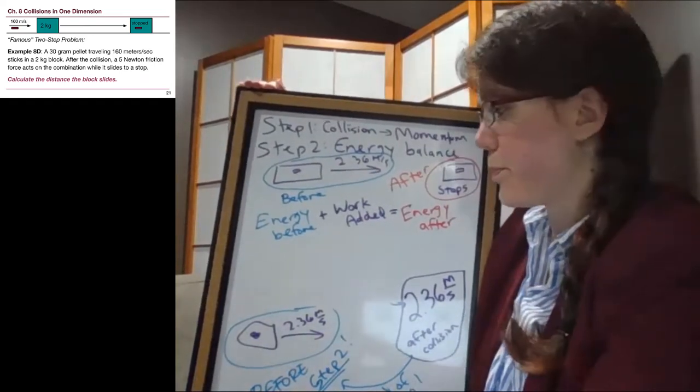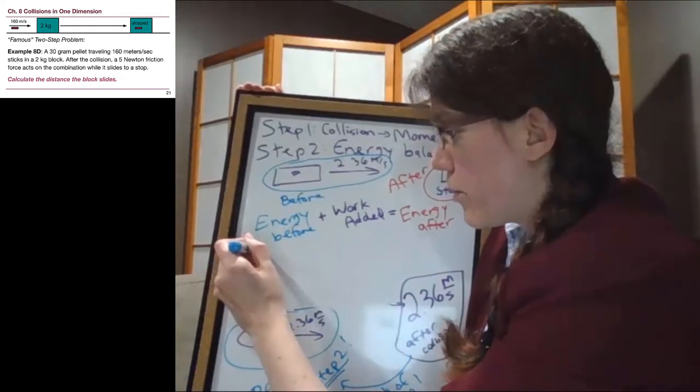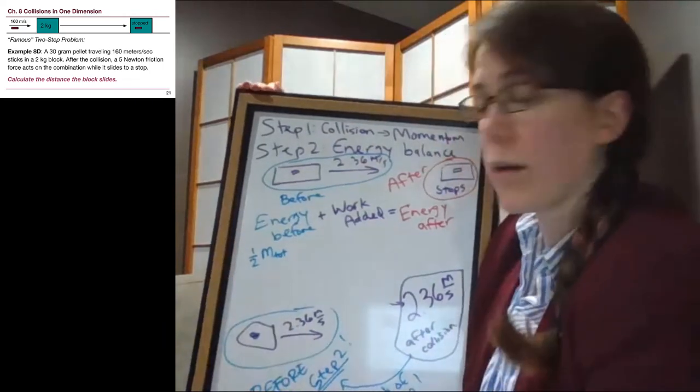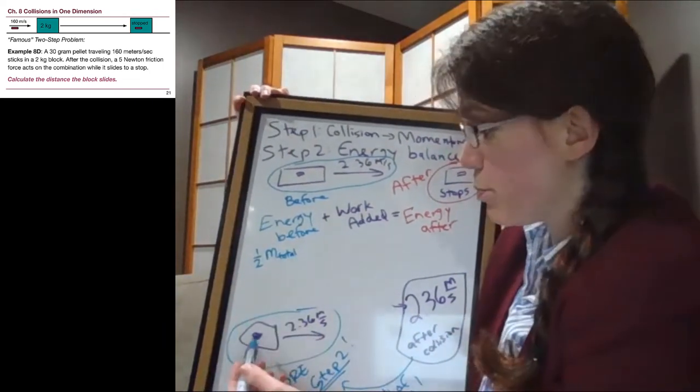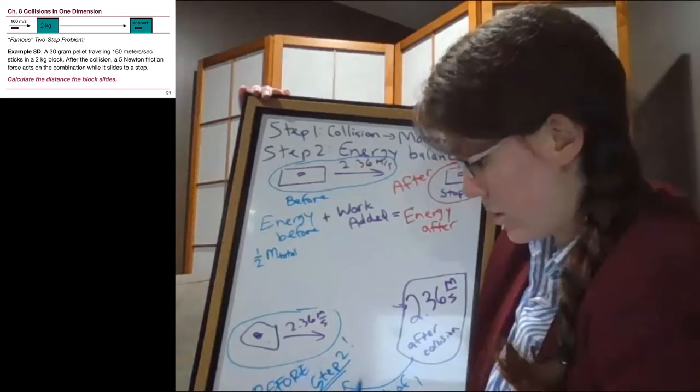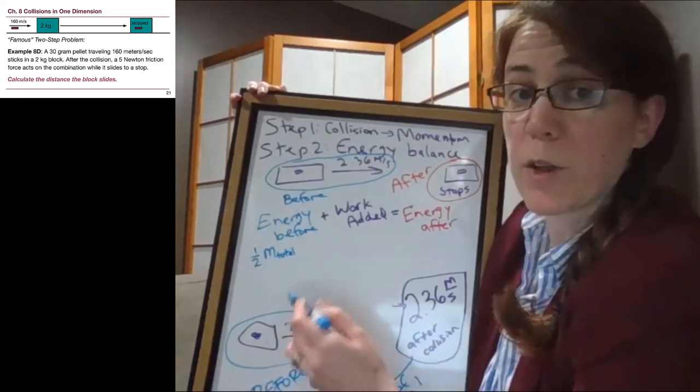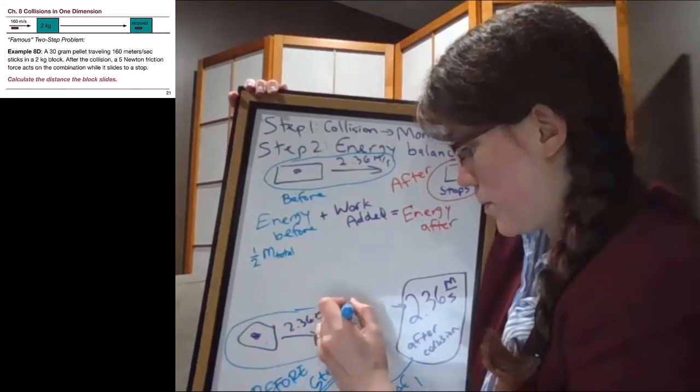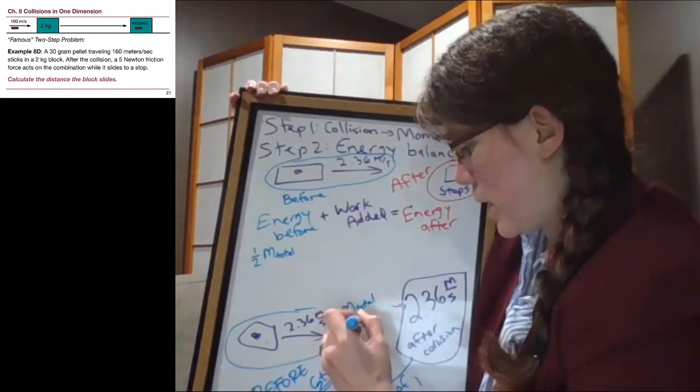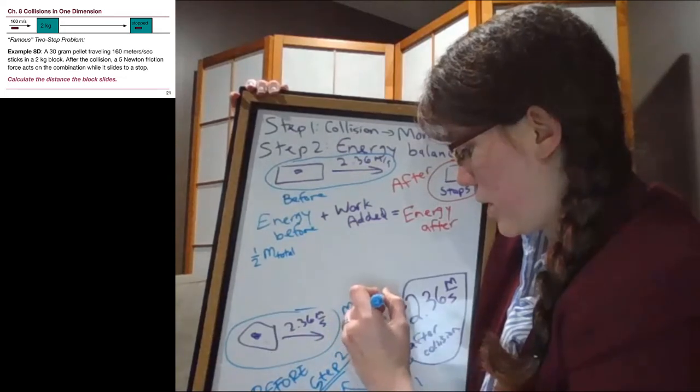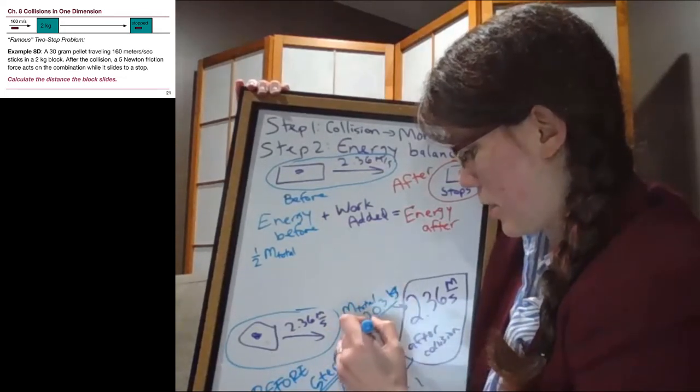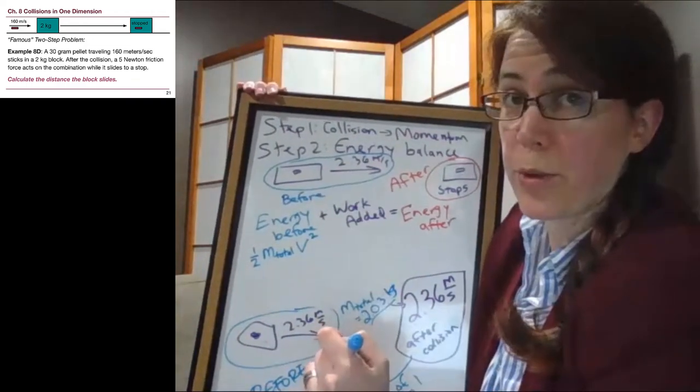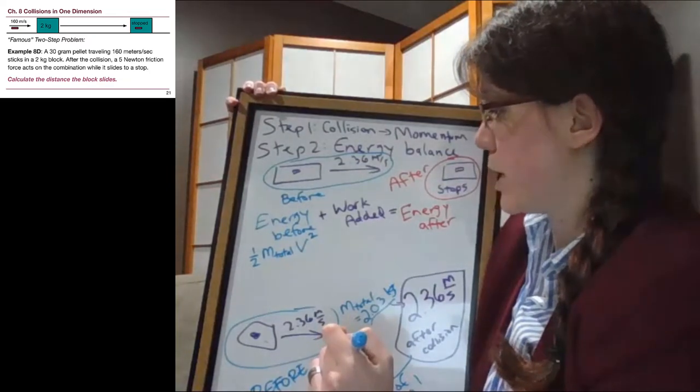Because we've already ruled out there being a gravity potential energy term, we've already ruled out there being a spring term, we just have to worry about kinetic energy and the work added term. So the energy before is going to be one half the total mass - I'm going to write m total, because both of these things together, the two kilograms and the 0.03 kilograms - the total mass is the 2.03 kilograms that we had to deal with in the first part. And then the v squared is that 2.36 meters per second squared.